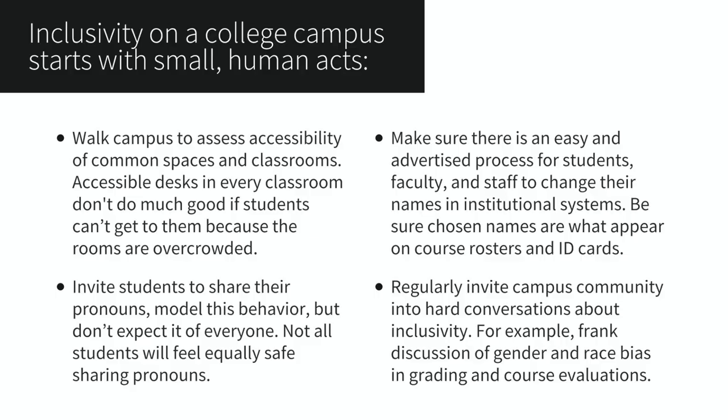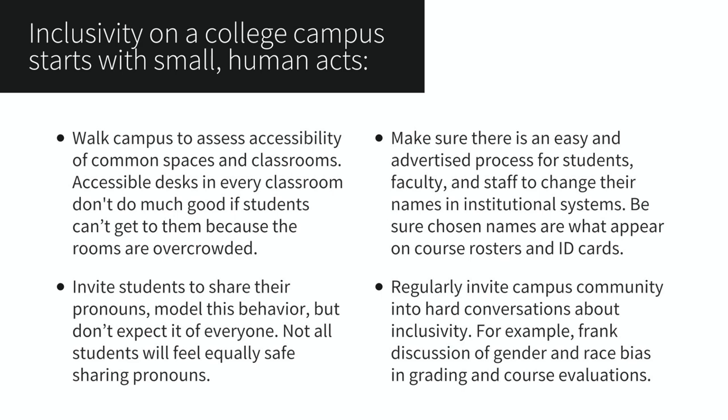Inclusivity on a college campus starts with small human acts. Walk campus to assess accessibility of common spaces and classrooms — accessible desks in every classroom don't do much good if students can't get to them because the rooms are overcrowded. Invite students to share their pronouns. Model this behavior, but don't expect it of everyone; not all students will feel equally safe sharing pronouns. Make sure there is an easy and advertised process for students, faculty, and staff to change their names in institutional systems, and be sure chosen names are what appear on course rosters and ID cards.